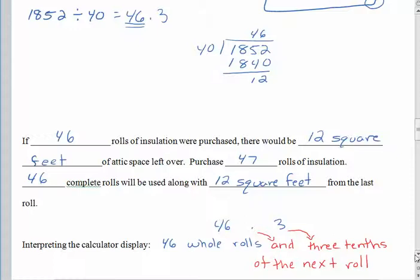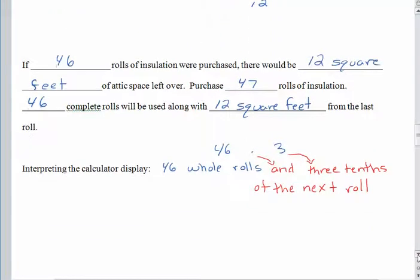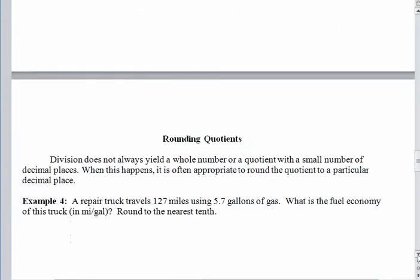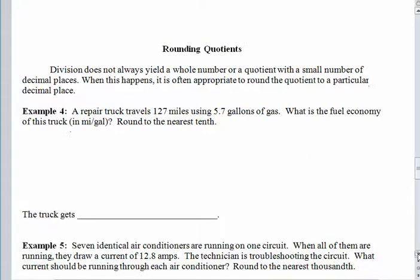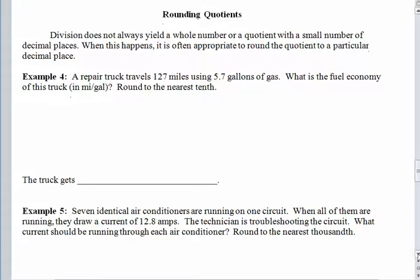Let's move on to the next topic and talk about times when we might need to round the answer to a division problem. Because division, of course, doesn't always give us nice quotients that either have a small number of decimal places or whole numbers. Oftentimes the calculator display is quite long and the calculator won't even hold all of the decimals in the answer. And then we have to round.